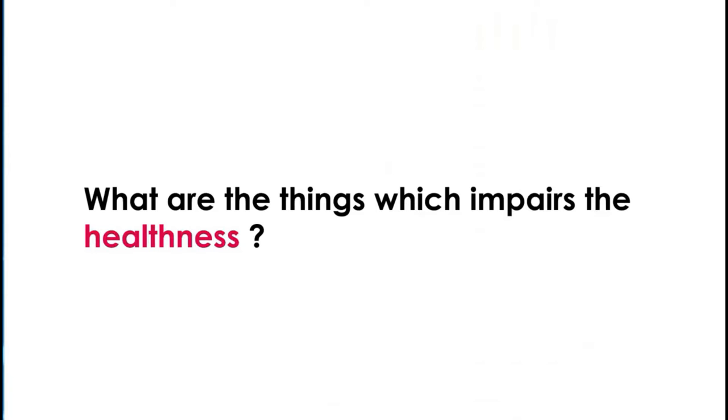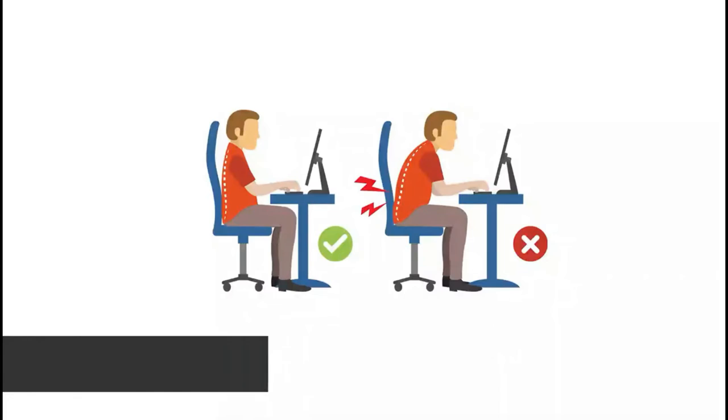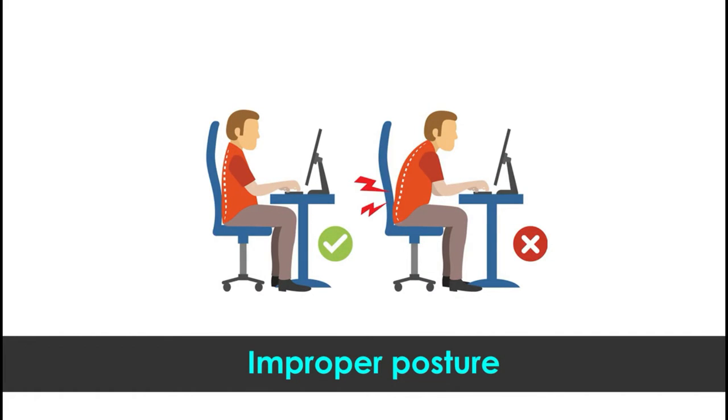Anything which disturbs the health of this intervertebral disc decreases its functional ability — decreasing the way it acts as a cushion. The overlying layer breaks, the cotton-like material comes out, and this compresses the nerve root causing sciatica. An improper posture increases the pressure within the disc, and as that pressure increases, it causes a crack in the overlying layer, which is called the annulus.